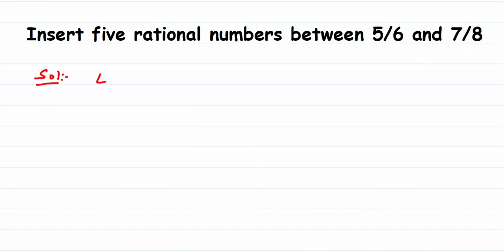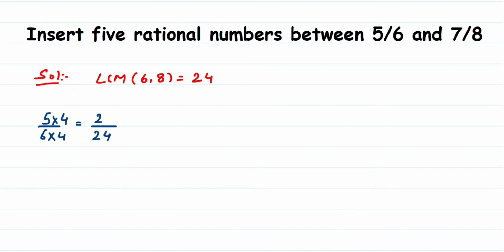The LCM of 6 and 8 is 24. Now I'm going to change the denominator for both numbers. The first number is 5/6 — I want denominator 24, so I find the equivalent fraction of 5/6 with denominator 24. Multiply numerator and denominator by 4 to get 20/24. For the second number 7/8, multiply by 3 to get 21/24.